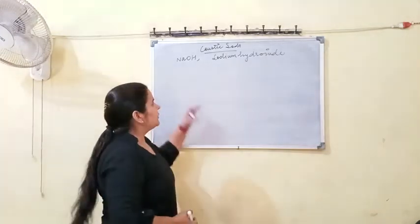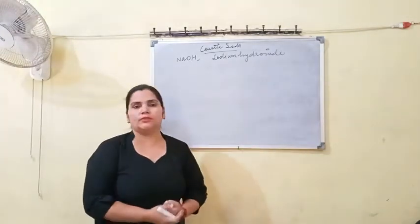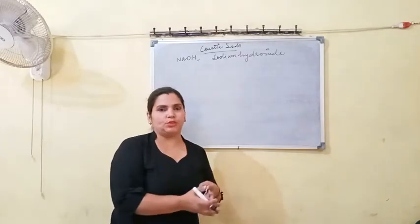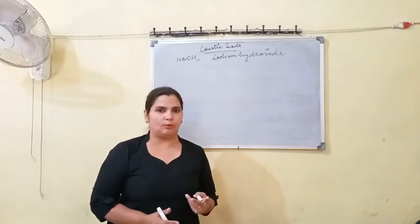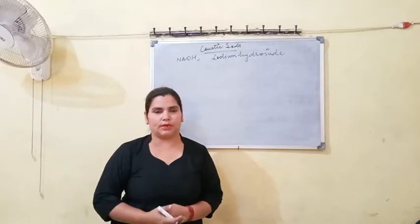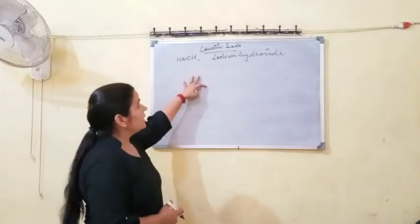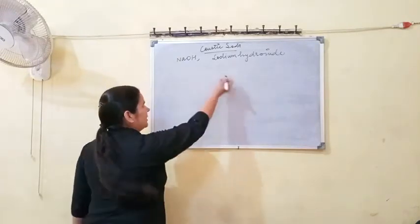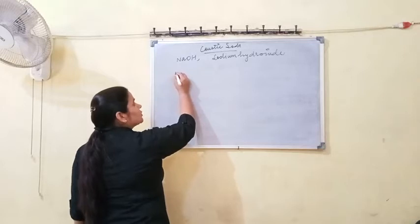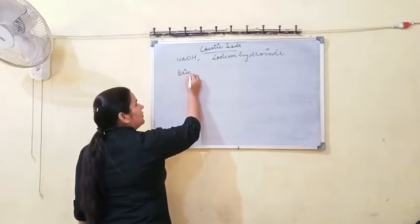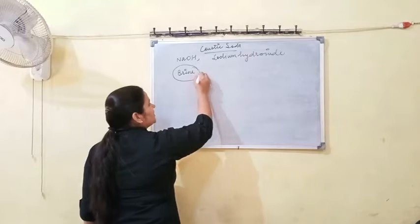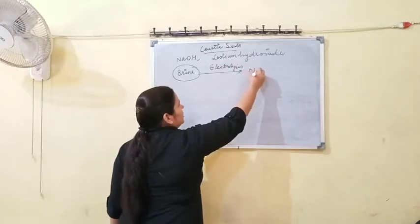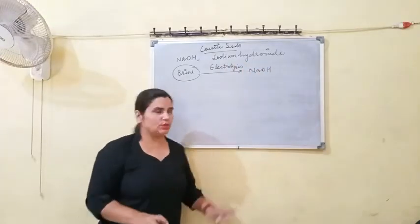First of all we will study about the preparation and manufacturing of sodium hydroxide. Manufacturing means large-scale production. Sodium hydroxide can be formed by the electrolysis of brine solution. This is the summary of preparation and manufacturing.